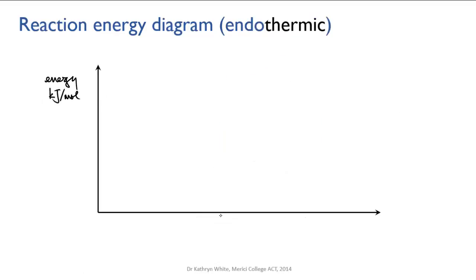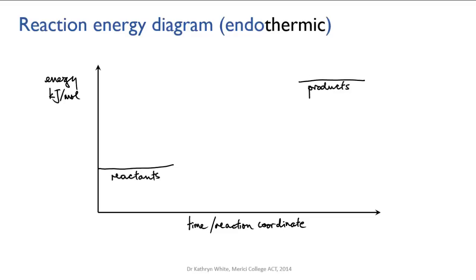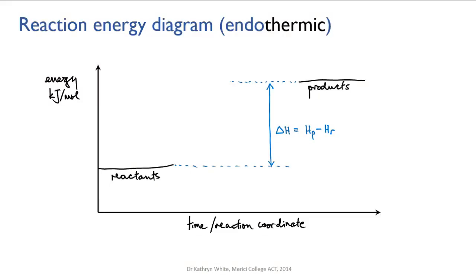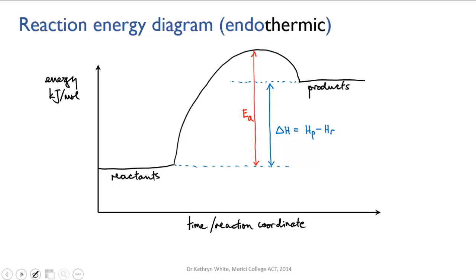Now let's draw a diagram for an endothermic reaction. If it's endothermic, energy is absorbed and the reactants at the beginning have less energy than the products at the end. The enthalpy is going from a low value to a high value, so the change is a positive one. The activation energy must be at least as big as the enthalpy change, because the reactants need to get up to at least the enthalpy of the products. We draw the activation energy up to that peak, and then there's a little decrease as the product molecules are formed, ending at the product enthalpy level.